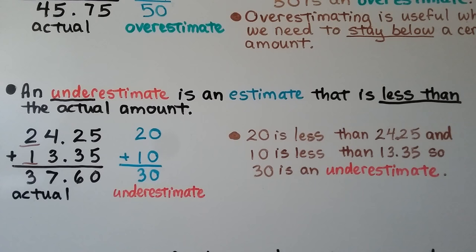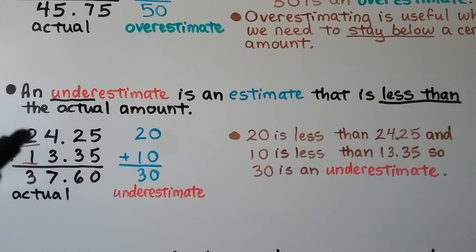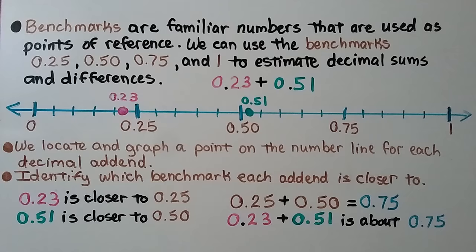An underestimate is an estimate that is less than the actual amount. We have 24 and 25 hundredths. The 4 tells the 2 to stay the same, then they drop off, so we have 20. And the 3 tells the 1 to stay the same, so we have 10. We underestimate at 30. Because 20 is lower than 24.25 and 10 is lower than the other decimal, our estimate is lower than the actual amount — so 30 is an underestimate.